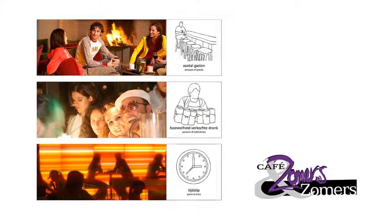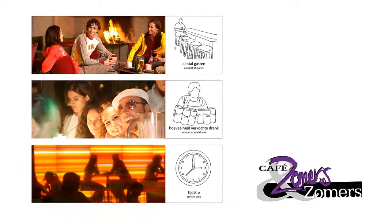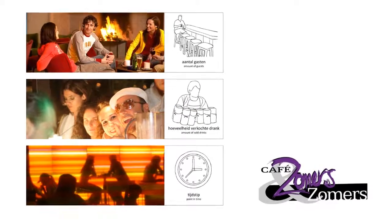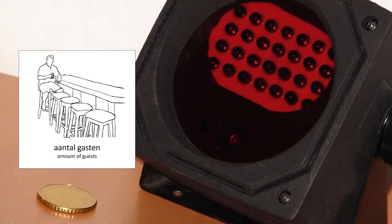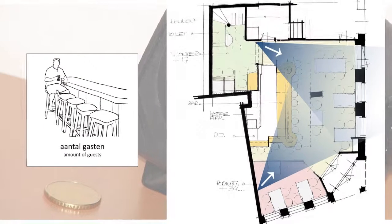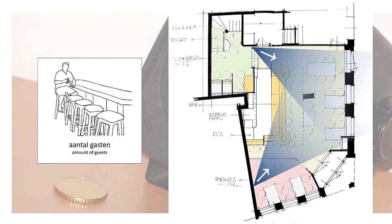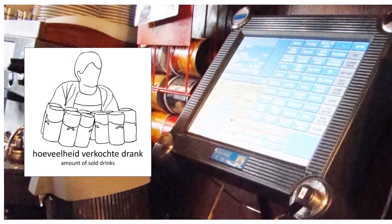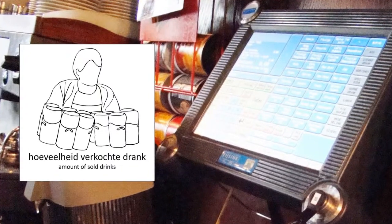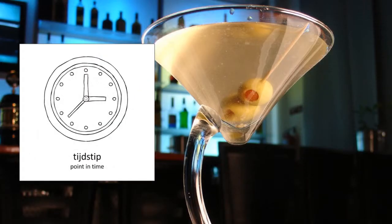In a bar in Den Bosch, it was tested if these three factors actually reflect the atmosphere. Amount of guests was measured with near-infrared webcams — two of these were placed in the bar, covering the biggest surface. The amount of sold drinks was monitored from the payment system, and the point in time was easiest to measure.